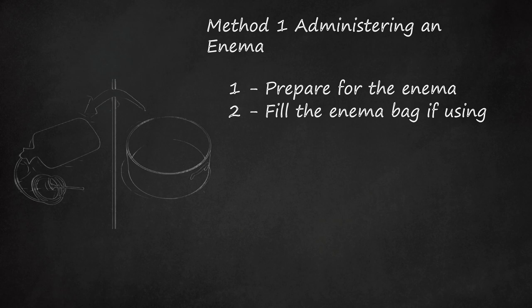Once the bag is full, hold the bag, hose end down, and open the clamp momentarily to allow the fluid to purge any air from the hose to avoid introducing air, which can cause cramps. Then close the clamp. In general, you use smaller amounts of fluid for retention enemas so the rectum is not overwhelmed with the amount of fluid and the individual can retain it without discomfort. Your doctor will instruct you on how full the bag should be.